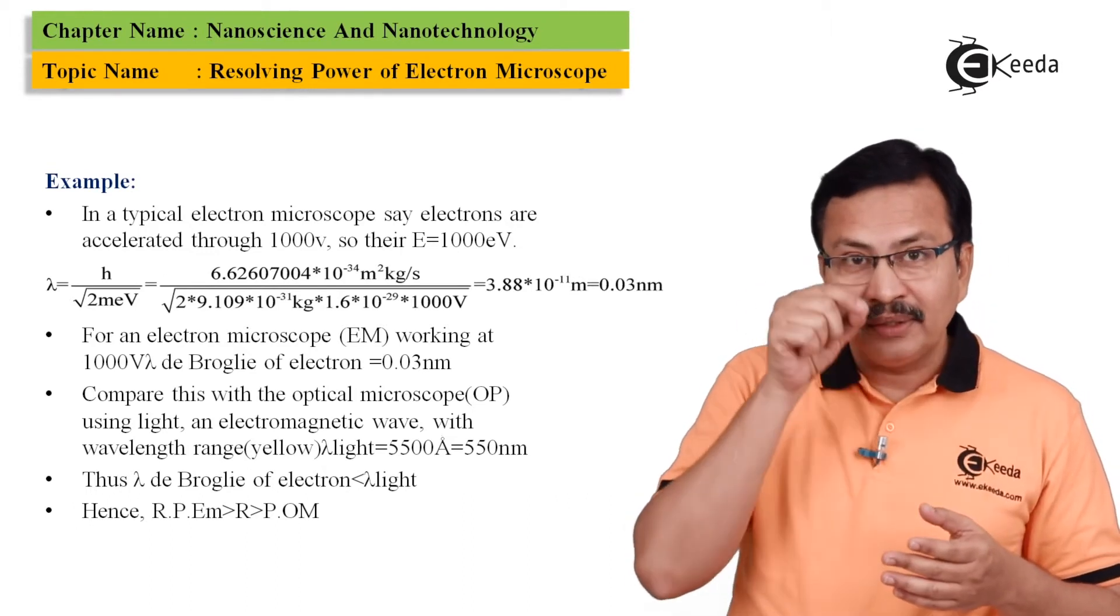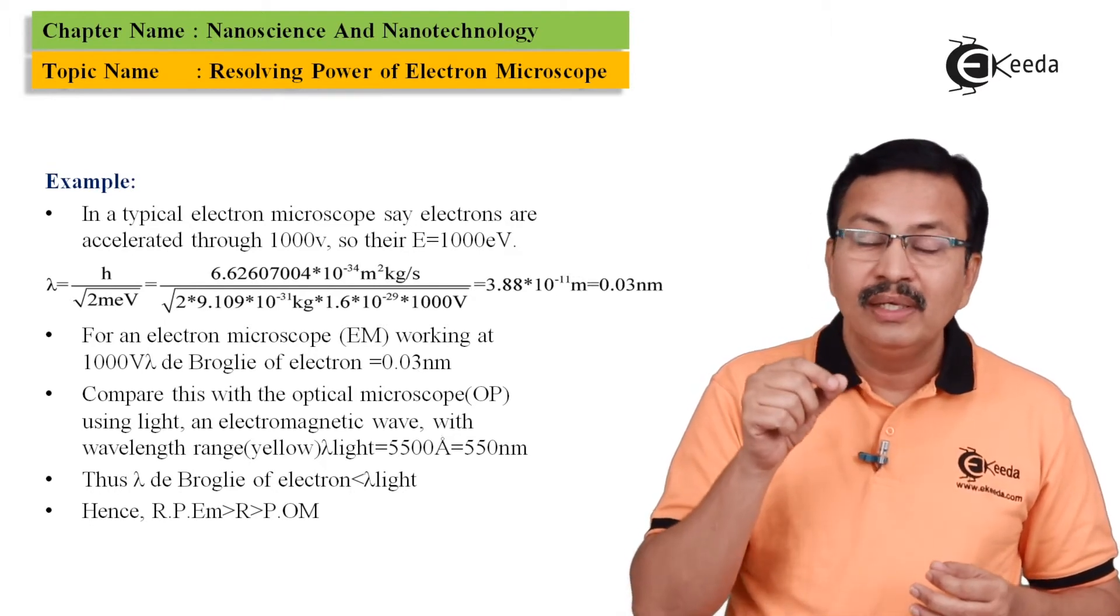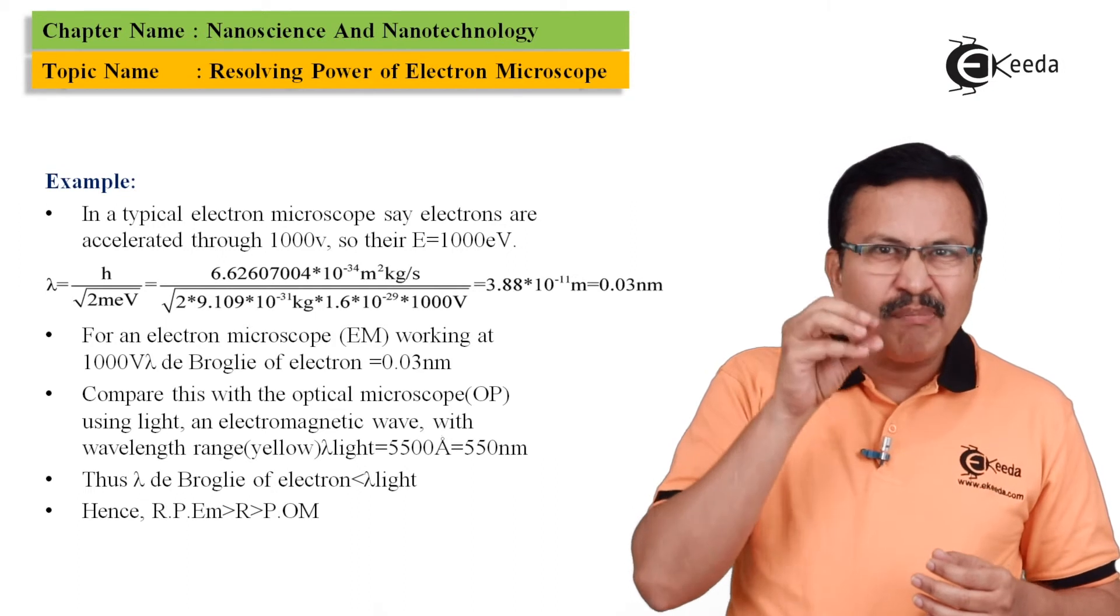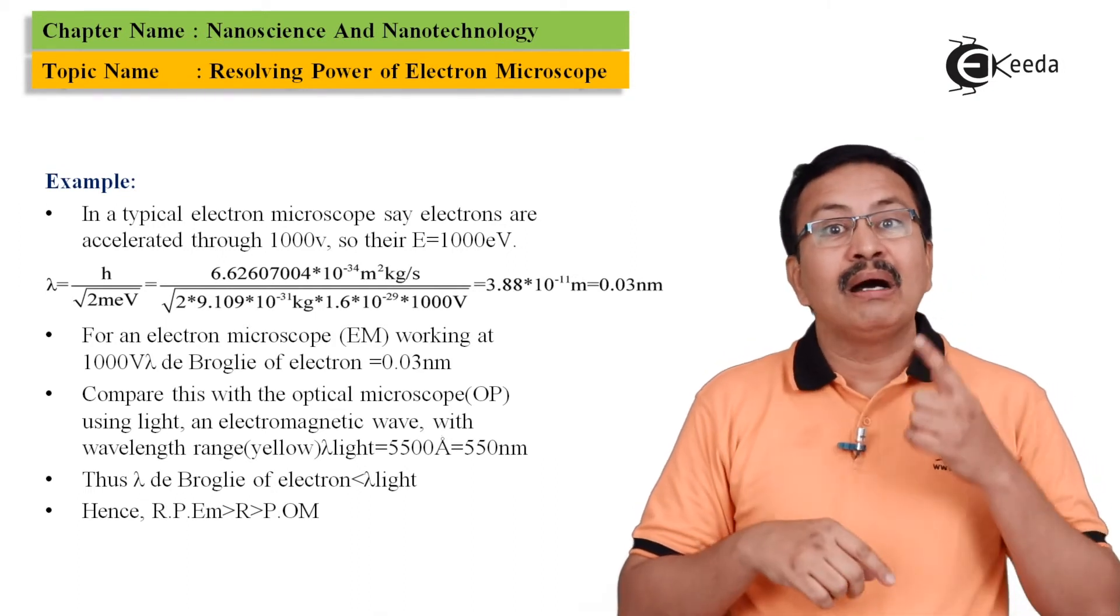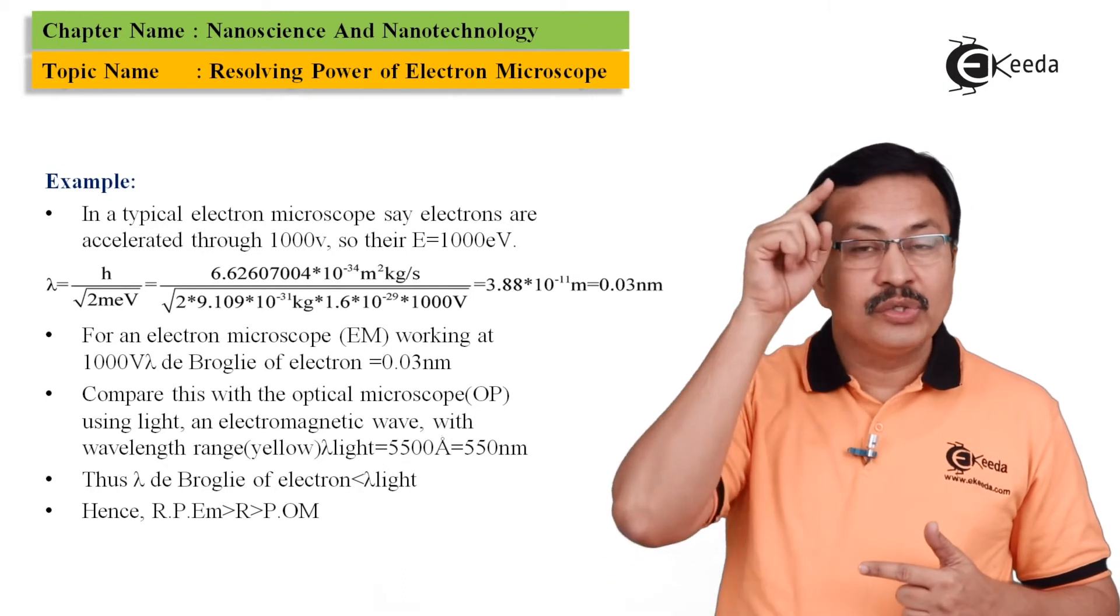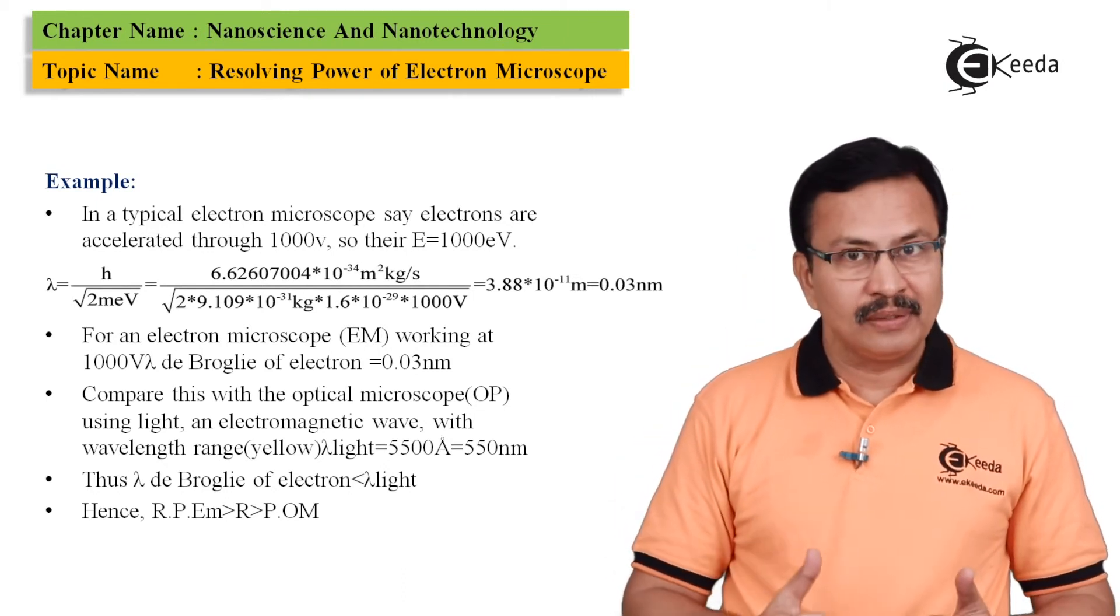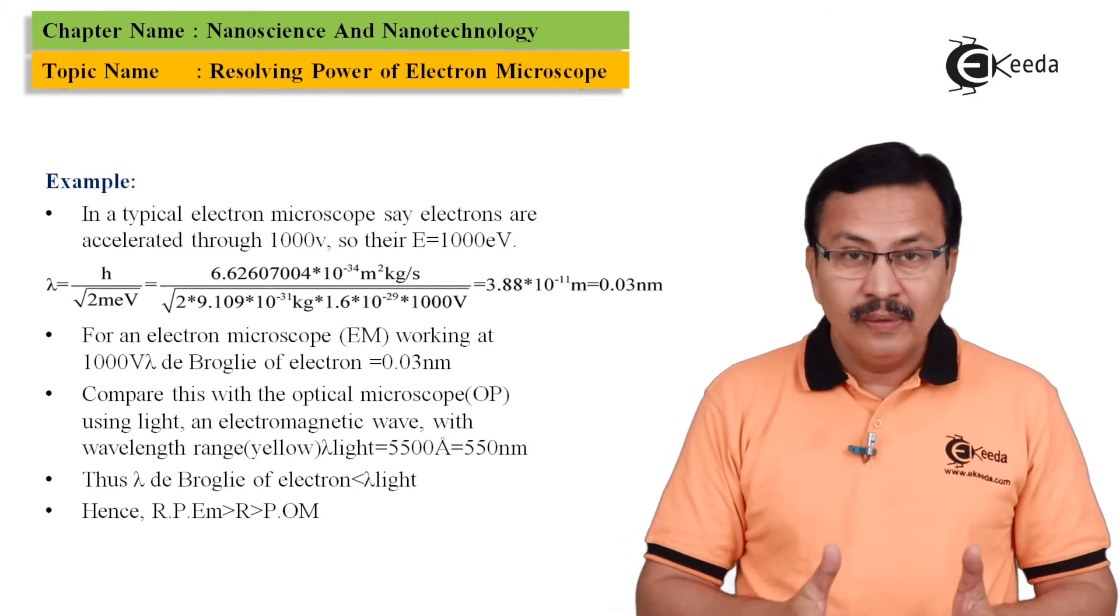the wavelength, the de Broglie wavelength of the electrons in itself is 0.03 nanometers which is much much smaller than the higher value of the wavelengths that is used in optical microscope, that is 550 nanometers. And as you know that